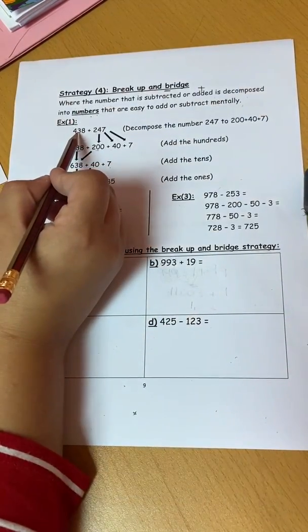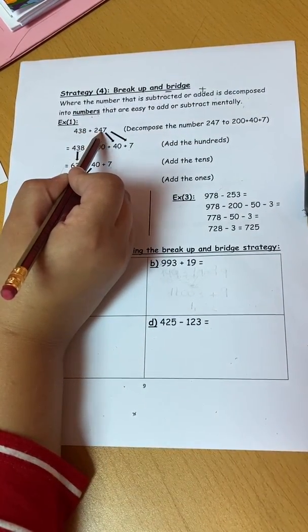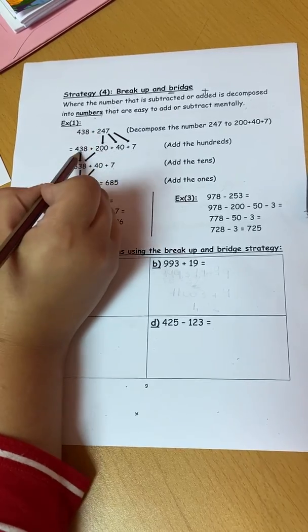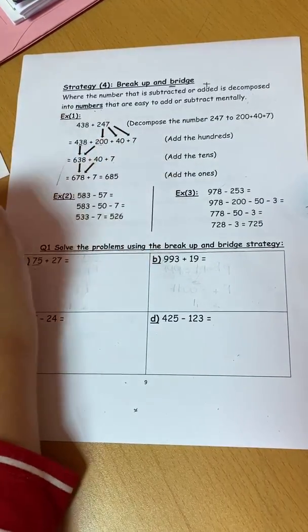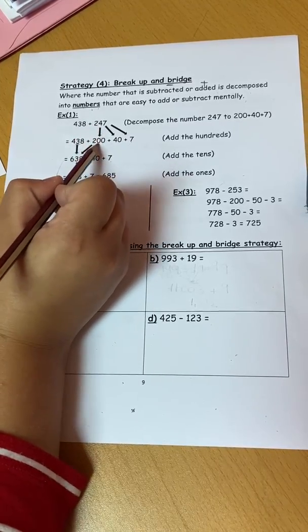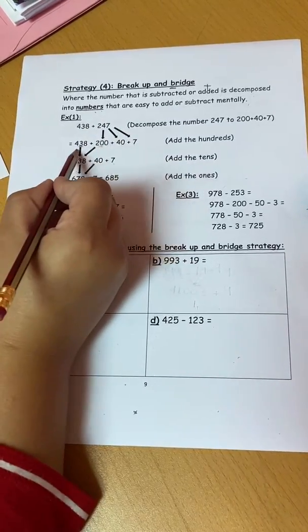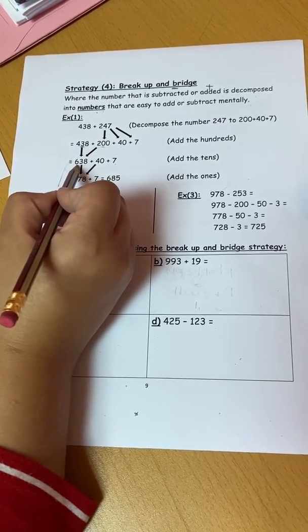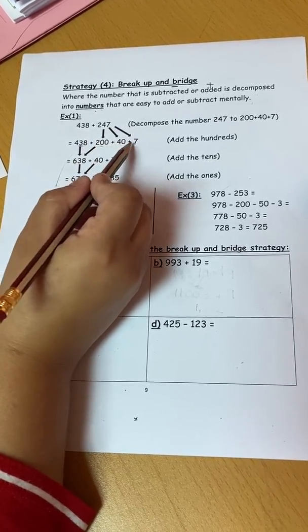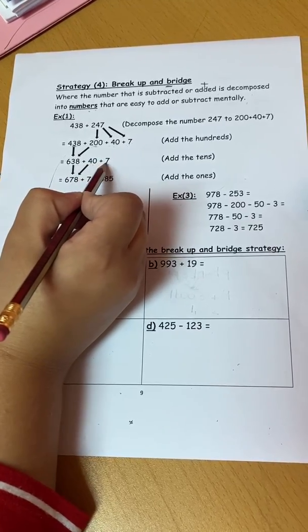For example, I have here 438 plus 247. I will leave the greater number as it is while I will decompose the smaller number using expanded form like here 200 plus 40 plus 7. Then I will add the hundreds together so 438 plus 200 I get 638 while the other numbers I will leave as it is plus 40 plus 7.